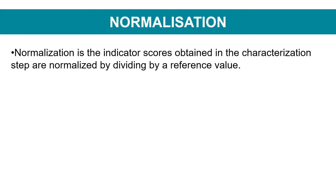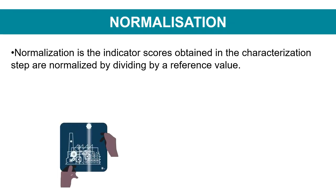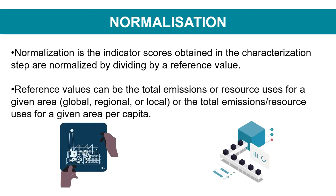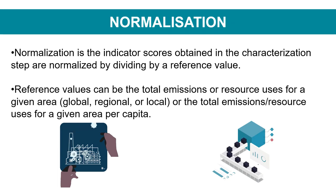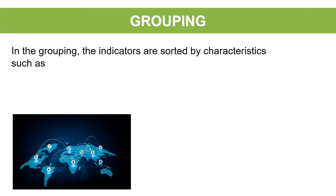Optional elements: normalization. The indicator scores obtained in the characterization step are normalized by dividing by a reference value. Reference values can be the total emissions or resource uses for a given area — global, regional, or local — or the total emissions and resource uses for a given area per capita.